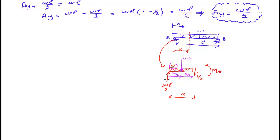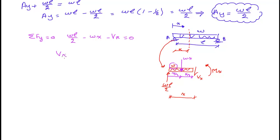Applying ΣFy = 0 to the left portion — we skip Ax since it's zero. We have WL/2 positive upward, minus WX downward, minus Vx equals zero. Solving for Vx: Vx = WL/2 − WX, or taking W as a common factor: Vx = W(L/2 − x). This is the equation for shear force as a function of x.